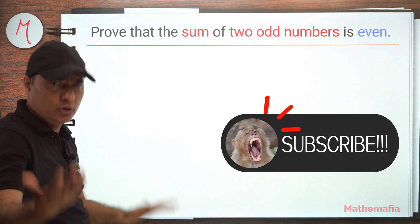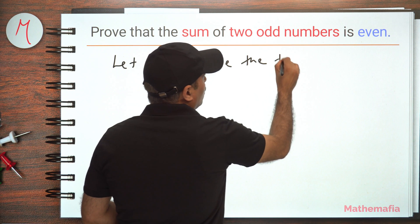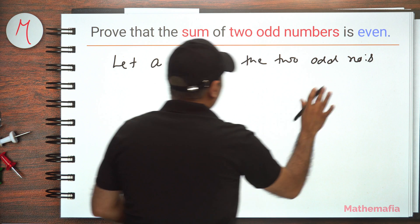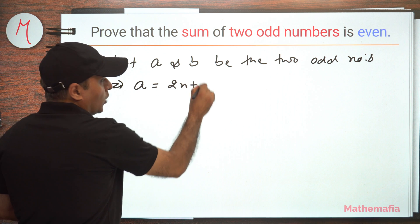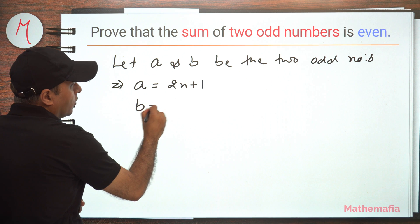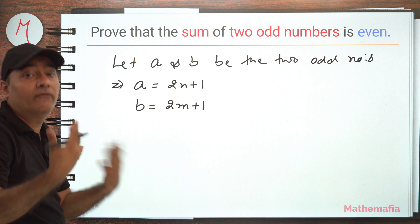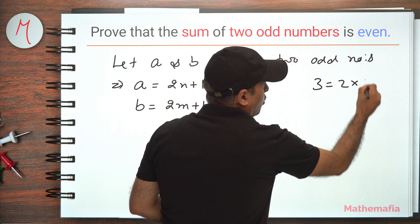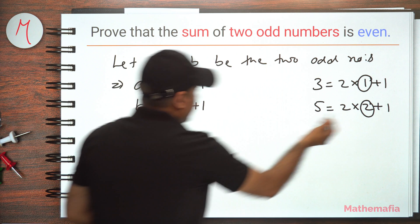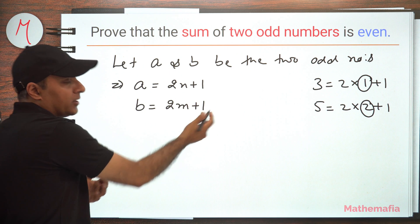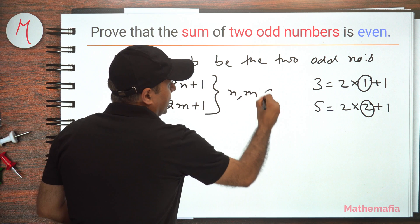We have to add two odd numbers, so let's take two odd numbers. Let a and b be any two odd numbers. If a and b are two odd numbers, then we can write a as 2n plus one, because a will be of this form. Similarly, b can also be written as 2m plus one. Why n here and m here? Because a and b can be two different odd numbers. For example, three can be written as two into one plus one, and five can be written as two into two plus one — the values are different. So that's why we write a as 2n plus one and b as 2m plus one.